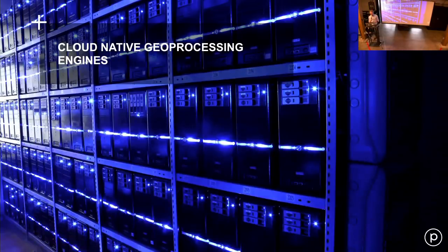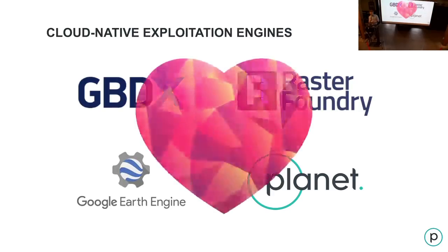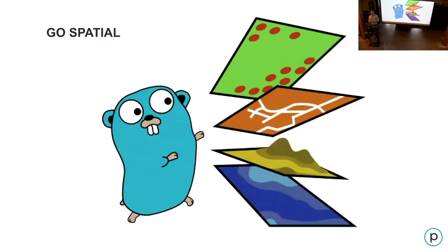The next piece of infrastructure is geoprocessing software that can scale. There's a new breed of cloud-native engines that can scale out to thousands of nodes to do processing and crunch this tsunami of data being generated. At Planet, we run 30,000 or more virtual machines just to crunch through the data coming from our constellation — and that's just a single constellation. It'll take even more machines to process the world's data. The cool thing is that most all these engines use open-source software at their core, building on what's come before in the open-source geospatial world. We also need to continue evolving open-source tools to be more cloud-aware.